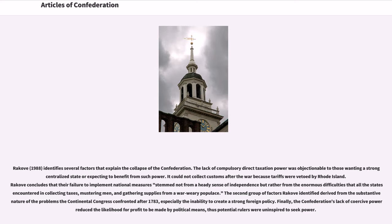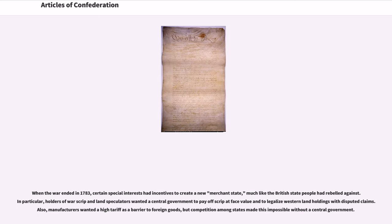The second group of factors Rakoff identified derived from the substantive nature of the problems the Continental Congress confronted after 1783, especially the inability to create a strong foreign policy. Finally, the Confederation's lack of coercive power reduced the likelihood for profit to be made by political means, thus potential rulers were uninspired to seek power. When the war ended in 1783, certain special interests had incentives to create a new merchant state. In particular, holders of war scrip and land speculators wanted a central government to pay off scrip at face value and to legalize western land holdings with disputed claims. Also, manufacturers wanted a high tariff as a barrier to foreign goods, but competition among states made this impossible without a central government.